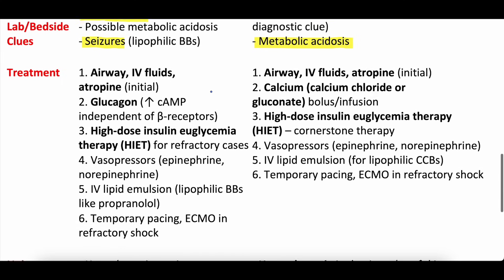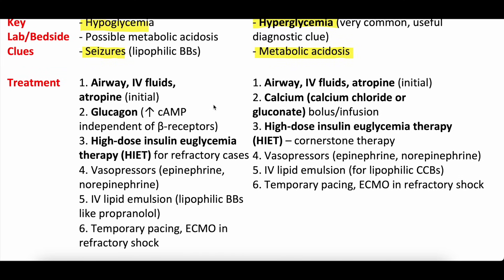How do we treat these two? The main differences are a couple of key medications. For both, you start with ABCs — airway, breathing, circulation — peripheral IVs, and fluids if needed, though not if they're in cardiogenic shock. You can try atropine in both, but if it works at all it will be transient. For beta blockers, you often start with glucagon, which can increase cyclic AMP. For calcium channel blockers, you give calcium to overcome the calcium channel blockade. So for beta blocker toxicity: trial glucagon; for calcium channel blocker toxicity: trial calcium.